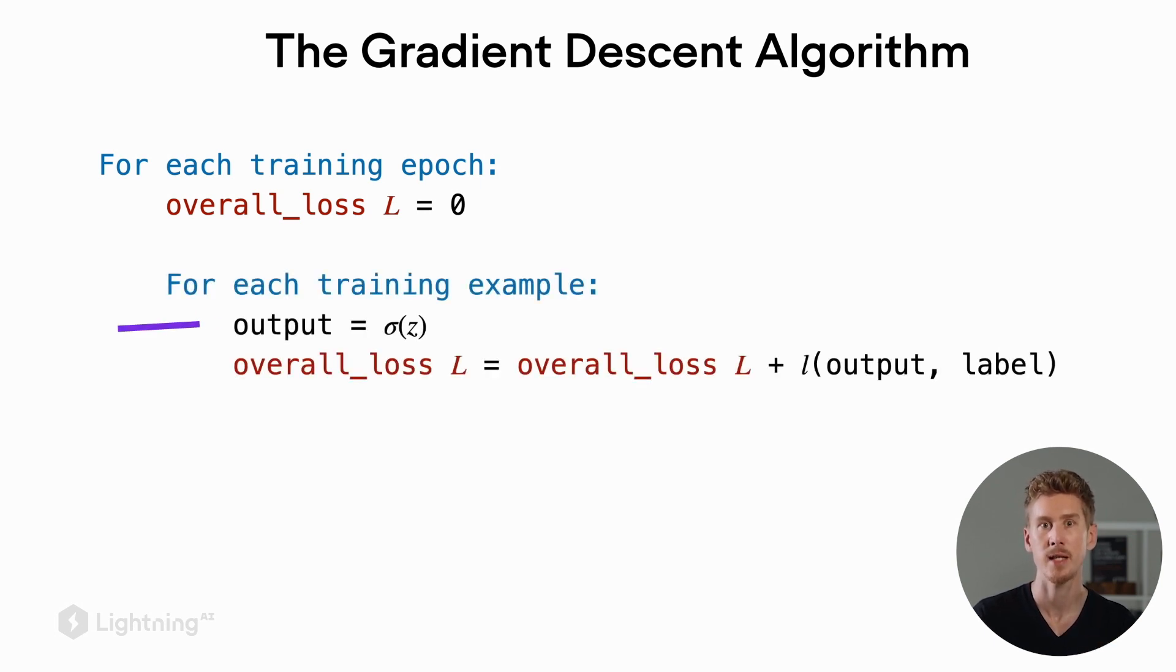So for each training example, we compute this activation value, which we call the output. And then we compute the loss of this current training example using the loss function between this output value and the actual class label.